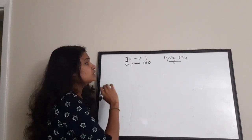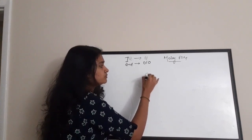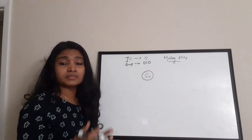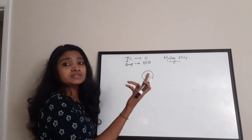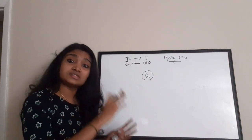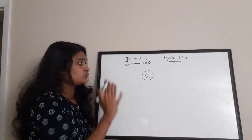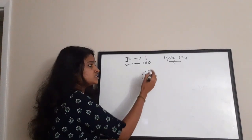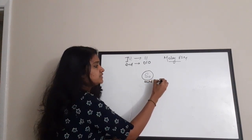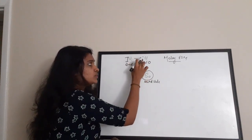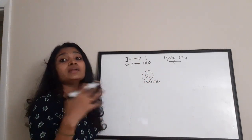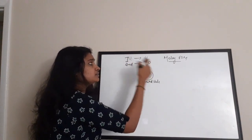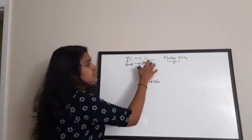The initial state is S0. In S0, both 0 and 1 are relevant: '1' is the starting bit of the first sequence and '0' is the starting bit of the second sequence. So if you receive a 0 you can start detecting the second sequence, and if you receive a 1 you can start detecting the first sequence.